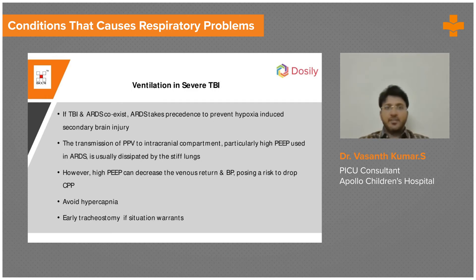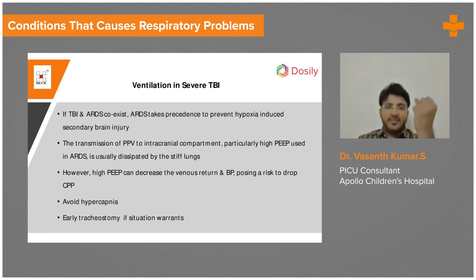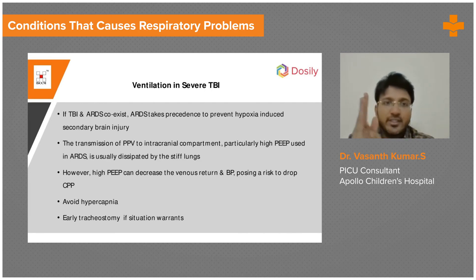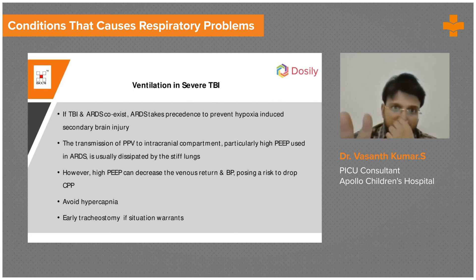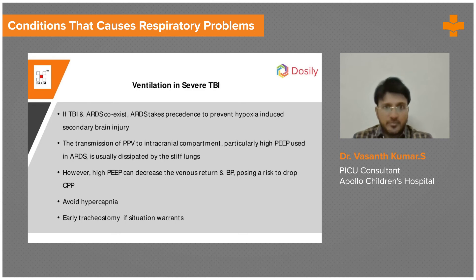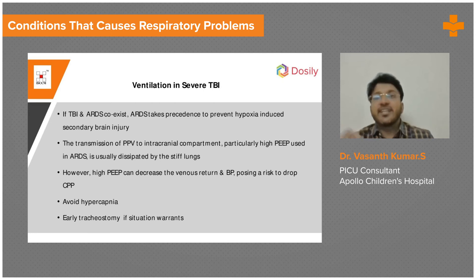When you have TBI along with ARDS, both common together, the brain takes precedence over the lung. ARDS strategies of permissive hypercapnia and permissive hypoxia will not work. You want saturation around 94 and strict CO2 targets of 35 to 45. Even if tidal volume has to be increased, go ahead — your brain always comes first, because hypoxia can cause secondary brain injury and hypercarbia can increase cerebral blood flow, raise ICP, and lead to herniation.